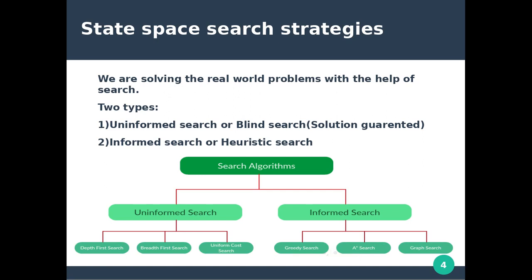Under uninformed search there are several types. Under informed search, examples include greedy search and graph search. Uninformed search is also known as blind search or heuristic search.